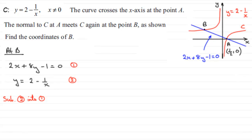And if we do that we're going to have 2x then. So we'll have therefore 2x plus 8 times, which is y, so 8 times (2 minus 1 over x). I want to expand the bracket out here. So we've got therefore 2x plus 16 minus 8 over x, and then minus 1 equals 0.